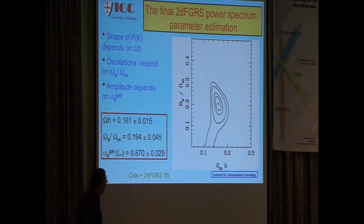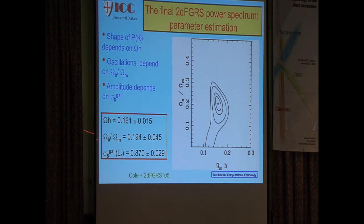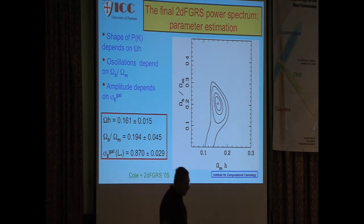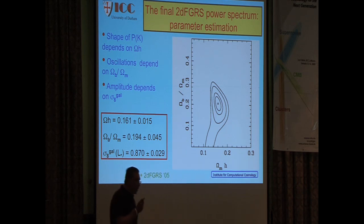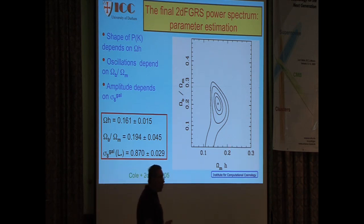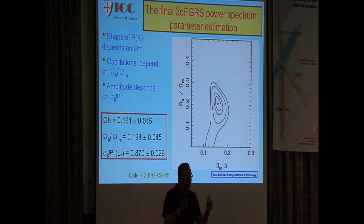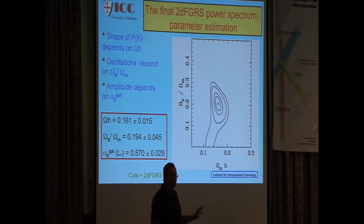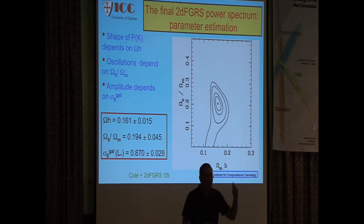Using the power spectrum including the baryon acoustic oscillations you can constrain the combination of Ω_m h and Ω_b. The values we obtained are entirely consistent with values from WMAP and other microwave background experiments — a completely independent check on model parameters. This shows a first simple application of baryon acoustic oscillations: you can learn about the baryon content of the universe. If you take into account both the oscillations and the shape of the spectrum, you also learn about Ω_m h.